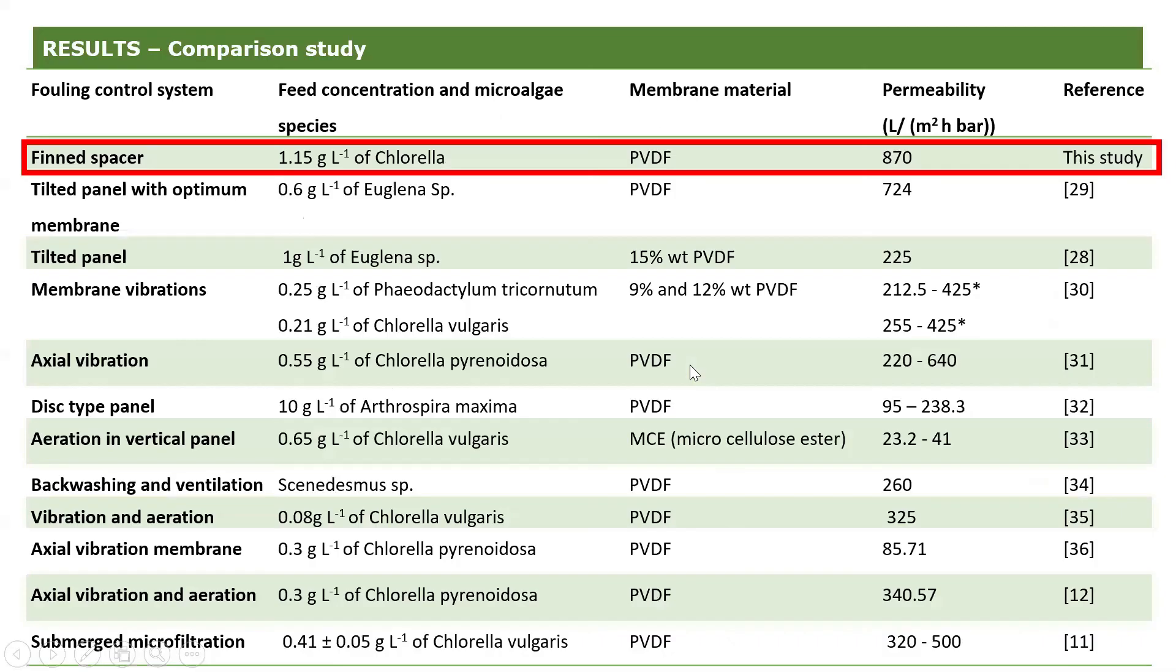We tried to compare what we achieved with this filtration, and as you can see here, there are so many different types of ways to control fouling for microalgae, and our result was actually the highest reported in literature, with a steady state permeability of close to 900 liter per square meter per hour per bar.